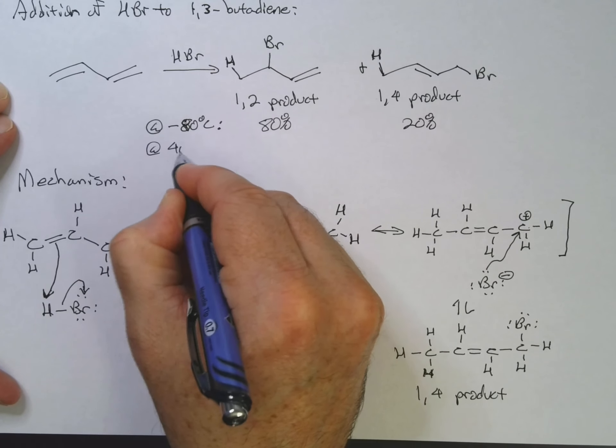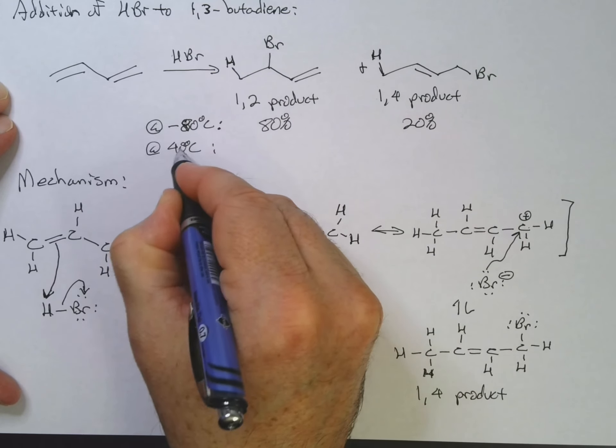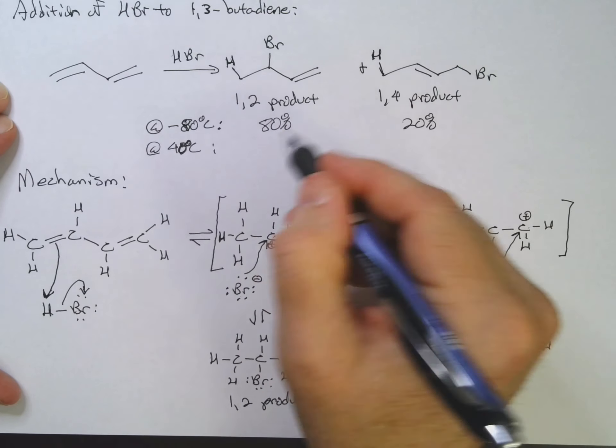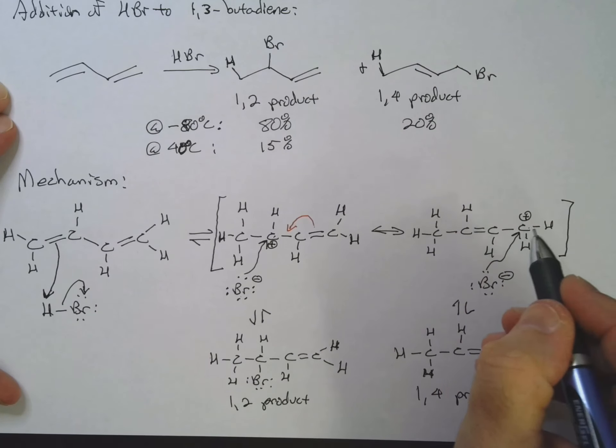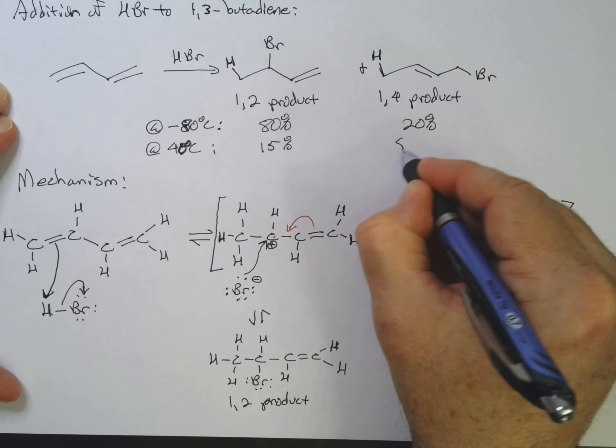If we're at 40 degrees Celsius, so higher temperature, we'll only get 15% 1,2 product and 85% 1,4 product.